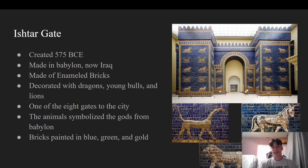It is made out of glazed bricks and is also covered in very powerful animals. Some of these animals consist of young bulls, dragons, and lions. These animals are painted in the color yellow, but some of them also have other colors like white and some hints of green, like the dragon around its neck.